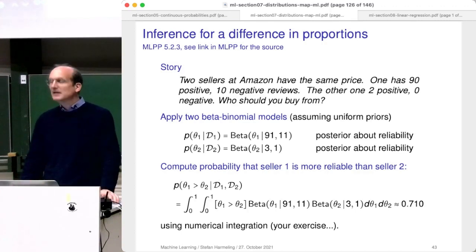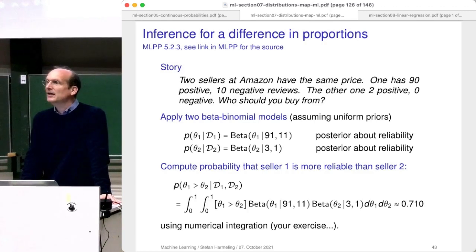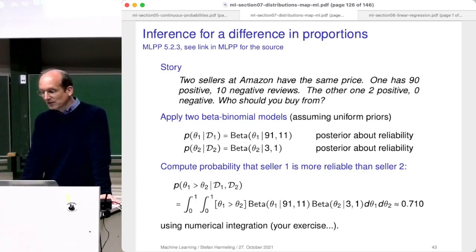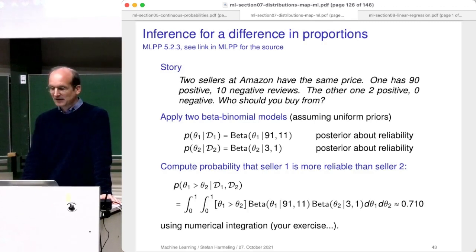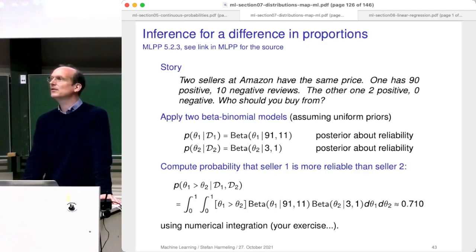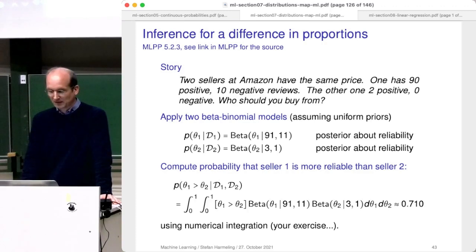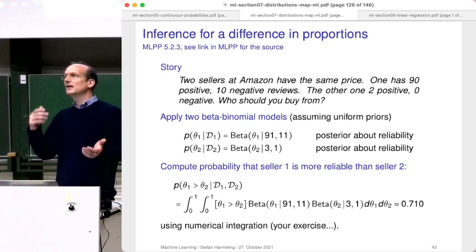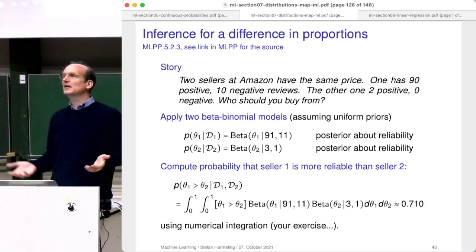However, it comes at a price. The criticism would be: if you can really write down your prior distributions well with beta distributions, then you can do Bayesian inference and answer this question. But that's what people often want — if you have a company, you want to make a decision now: which seller is better? You want to get a concrete number.